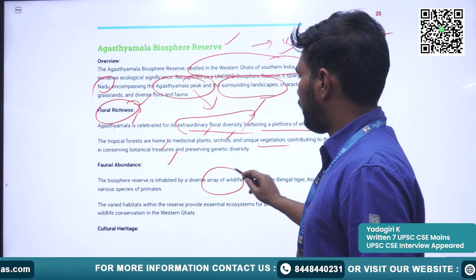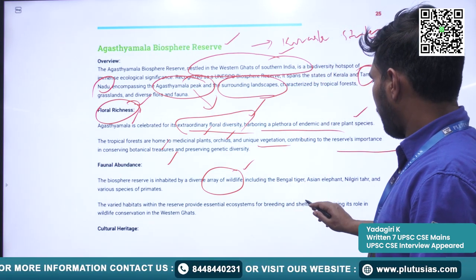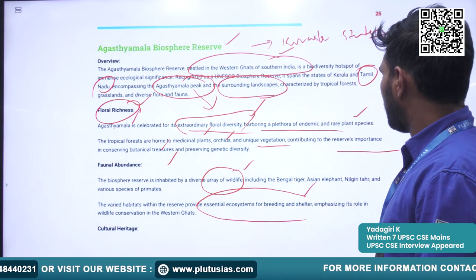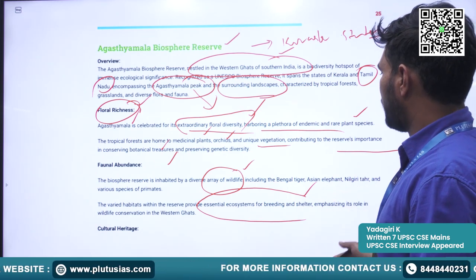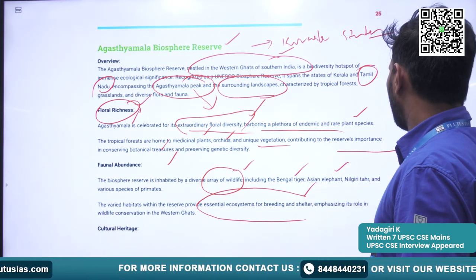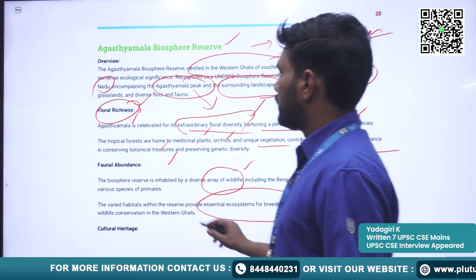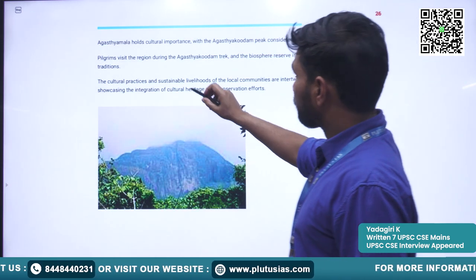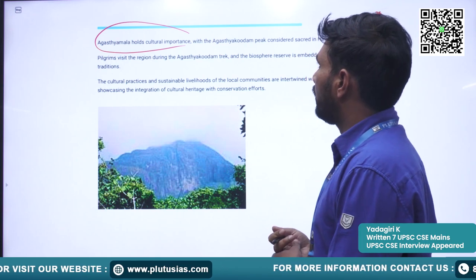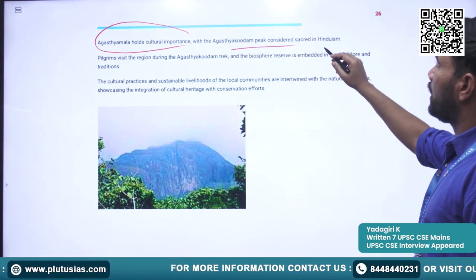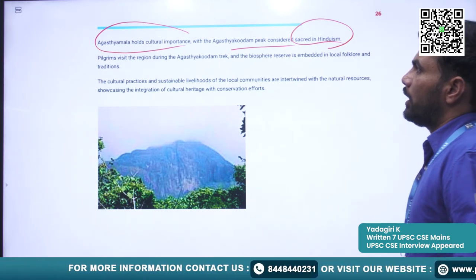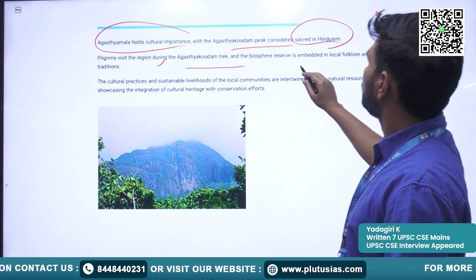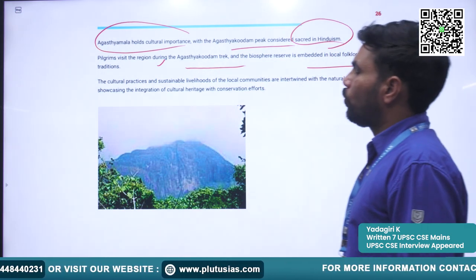It is home to a rich array of wildlife; the ecosystem provides essential habitat for breeding and shelter of various animal species like Bengal tiger, Asian elephant, Nilgiri tahr, and various species of primates. It also holds cultural significance with Agasthyakoodam Peak considered sacred for Hindus, and pilgrims visit this region during the Agasthyakoodam trek.